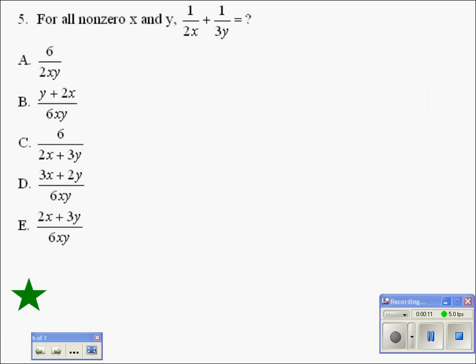For all non-zero x and y, 1 divided by 2x plus 1 divided by 3y equals. This problem deals with adding fractions that have uncommon denominators. To be able to add them, we need common denominators.